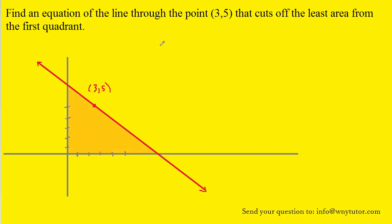The general equation of a straight line looks like the following — this happens to be the point-slope form for the equation of a line. We can see from the picture and from the description that the line passes through the point, so we know one point on the line. That means we can plug 3 in for x₁ and 5 in for y₁ into the equation of the line.